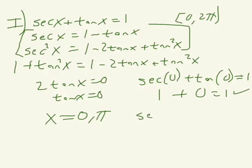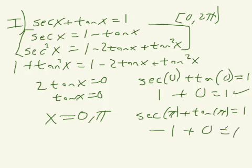Let's try the other one. Secant of pi plus tangent of pi equals 1. Secant of pi is actually negative 1. Tangent of pi is still 0. But that does not work.